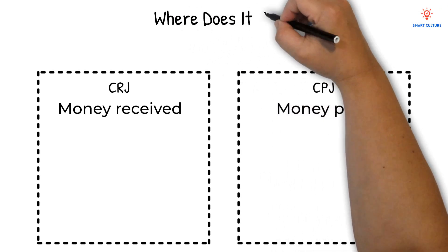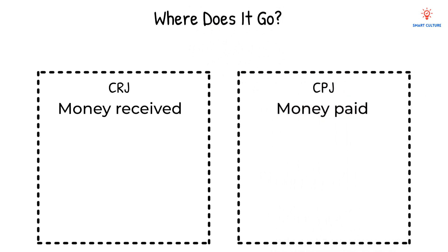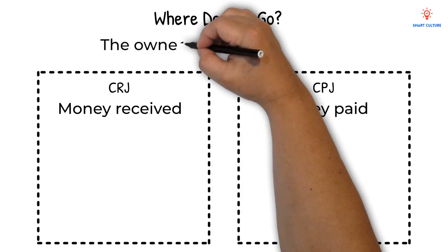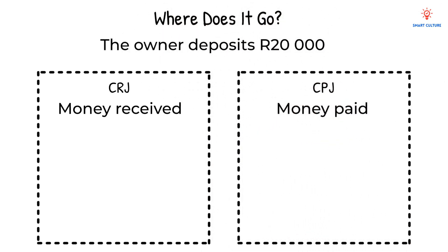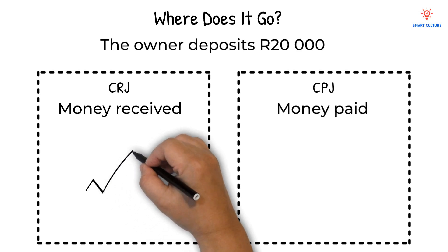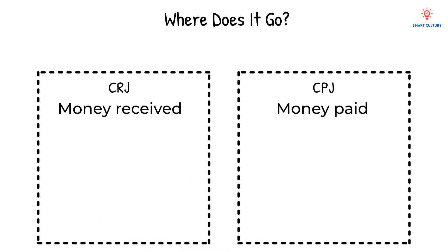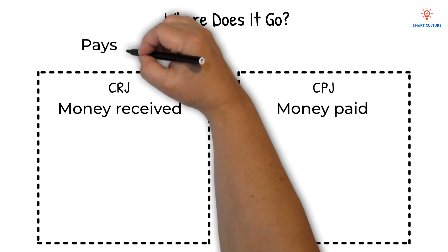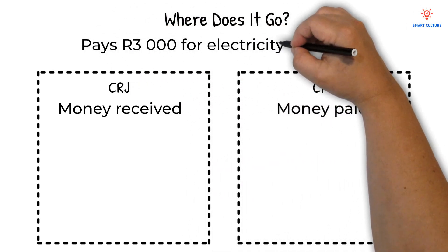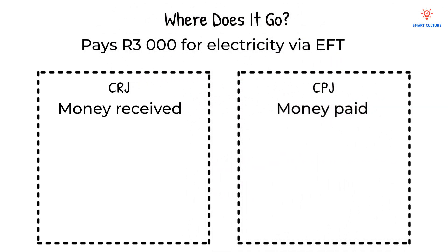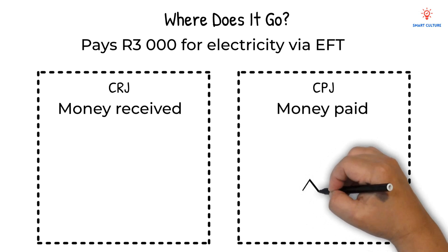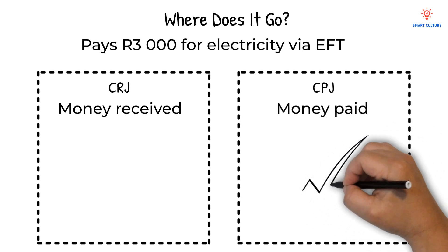Let's look at a few transactions and decide whether it should be recorded in the CRJ or the CPJ. First, the owner deposits 20,000 Rand. In this case the business receives money, therefore it will be recorded in the CRJ. In the second transaction, 3,000 Rand is paid by EFT for electricity. In this case money goes out of the business and therefore this will be recorded in the CPJ.